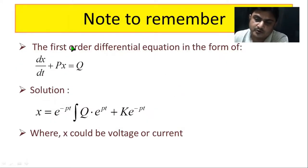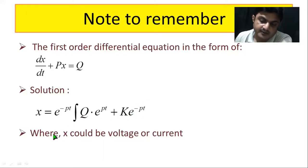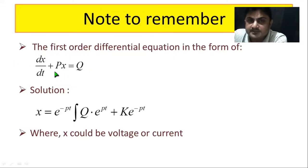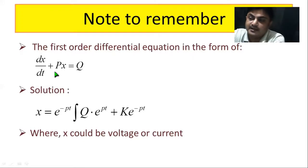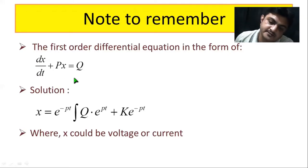This is a note you must remember whenever you are solving a first order differential equation. Whenever you have a first order differential equation in the form of dx/dt + px = q, the solution is x = e^(-pt) × integral(q × e^(pt)) + K × e^(-pt), where x could be voltage or current when solving RL or RC circuits. You encounter this equation when you have R and L, or R and C in series in a circuit.